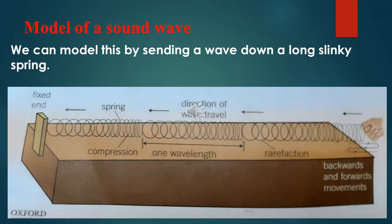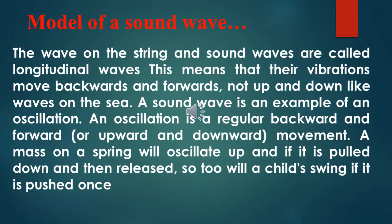We can explain this topic with the help of a diagram. We can model this by sending a wave down a long slinky spring. Observe the diagram by stopping your video. The wave on the string and sound waves are called longitudinal waves — this means that their vibrations move backwards and forwards, not up and down like waves on the sea. A sound wave is an example of an oscillation. An oscillation is a regular backward and forward movement. A mass on a spring will oscillate if it is pulled down and then released, as will a child on a swing if it is pushed once.